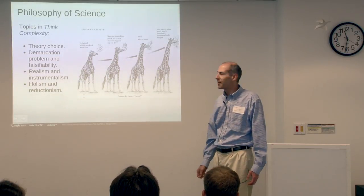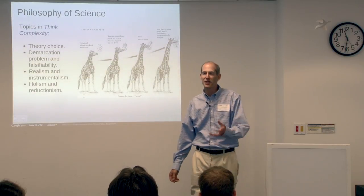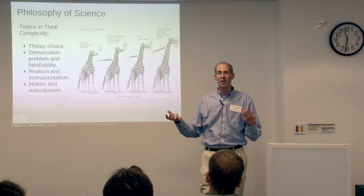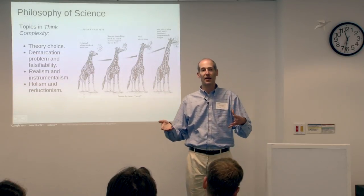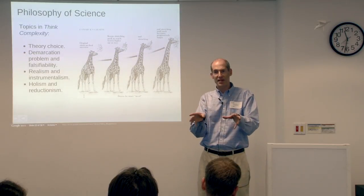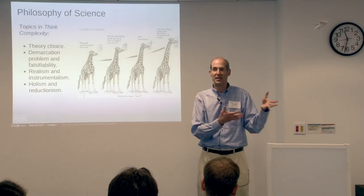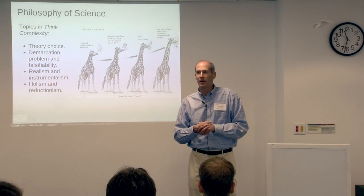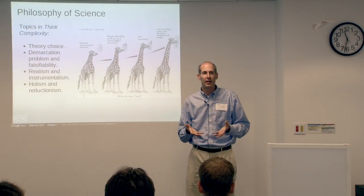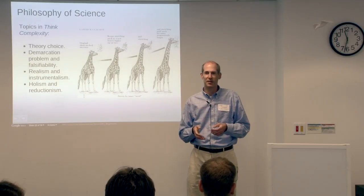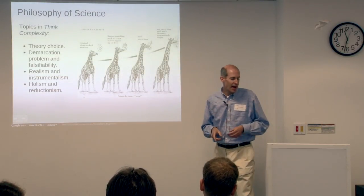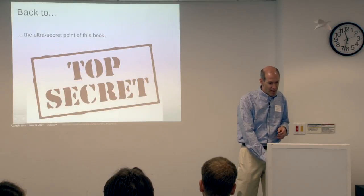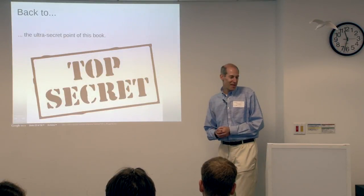Each chapter of the book tends to raise a different issue in philosophy of science. Theory choice is one of the first topics. The demarcation problem is another — is there a justified definition of science that lets us distinguish between real science and pseudoscience or religion? Realism and instrumentalism comes up quite a lot, pertaining to how we interpret the theories and models we use to describe physical systems. Holism and reductionism is another topic. But I'll come back to the ultra-secret point of this book.